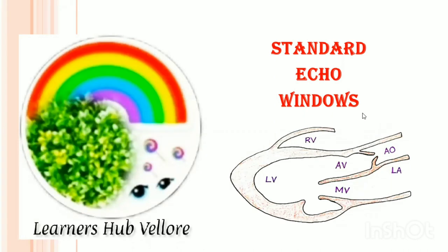What is trans thoracic echo? Conventional echocardiography is performed from the anterior chest wall, which we call the precordium — so that is called trans thoracic echo. What is trans esophageal echo? Echocardiography can also be performed from the esophagus, and that is called trans esophageal echo.